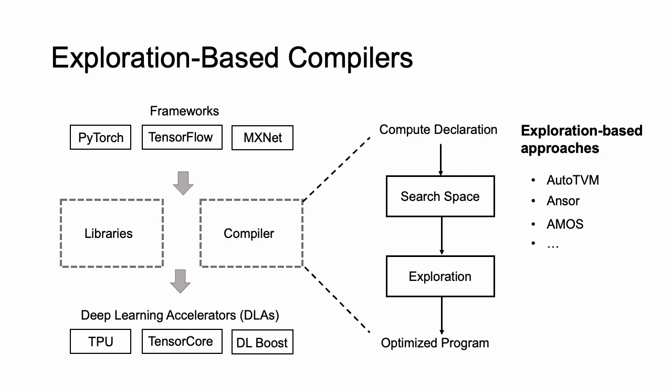Exploration-based compilers treat high-performance library generation as a search-based exploration process and require much fewer human efforts. Commonly used exploration-based approaches include AutoTVM, Answer, and Amos.